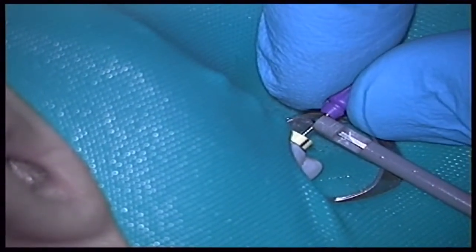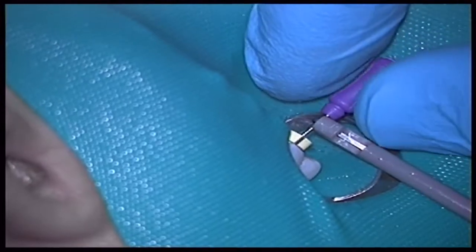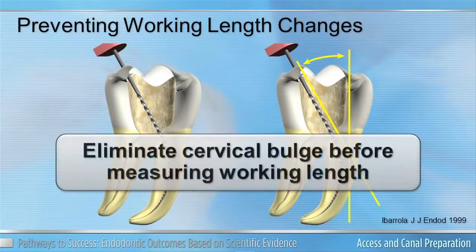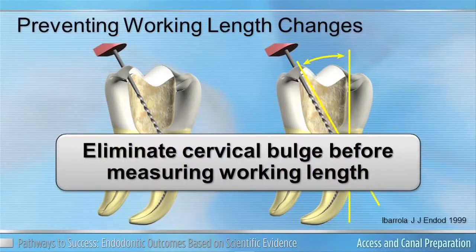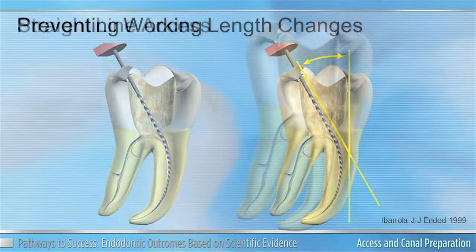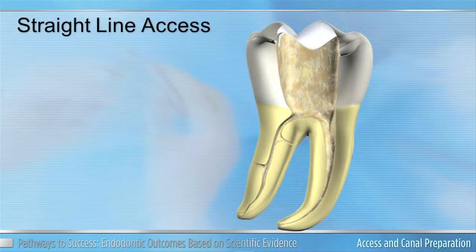When determining your working length, you want to remember that Ibarola told us that the best time to determine your working length is after getting rid of your dentin triangle in the coronal segment. This is because before doing that, you have a curve coronally and apically, and upon removal of that dentin triangle, you actually have a canal that's shorter than your initial estimate.